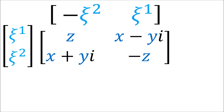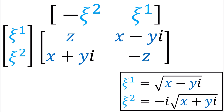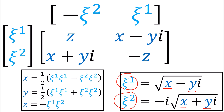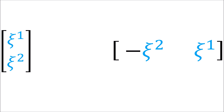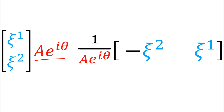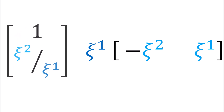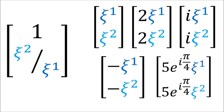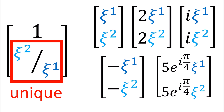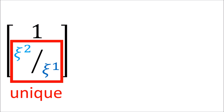So we've discovered a solution to the problem of factoring a polyvector into a column and a row. The components ξ¹ and ξ² are given in terms of x and y by these formulas, and we can also solve for x, y, and z in terms of ξ¹ and ξ². There are multiple solutions for the ξ components — we can always multiply the column spinner by a complex number with magnitude a and phase θ if we divide the row spinner by the same number. For example, multiplying the column spinner by 1/ξ¹ gives components (1, ξ²/ξ¹). While there are multiple possible column spinners, the ratio ξ²/ξ¹ will be the same for all solutions — it is a single unique complex number.